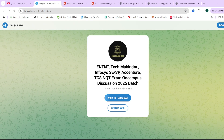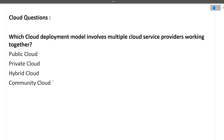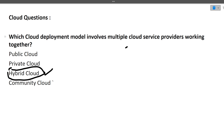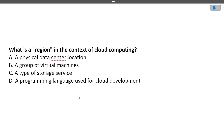Let's start the video — make sure to watch till the end. The first question is: which cloud deployment model involves multiple cloud service providers working together? If you see the options, there is a hybrid cloud option. It is straightforward — if we have multiple clouds working together, it is a hybrid cloud. Public cloud and private cloud are separate entities, but for this question, hybrid cloud is the correct answer.